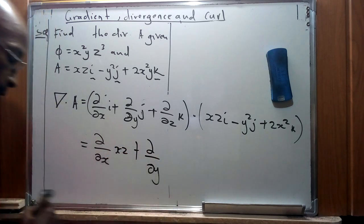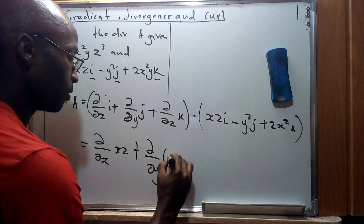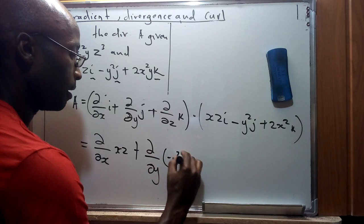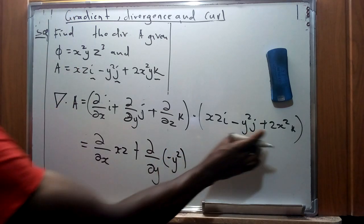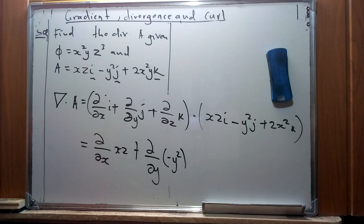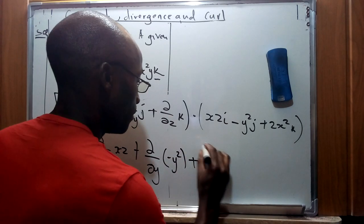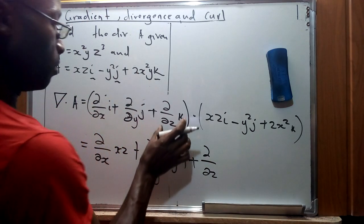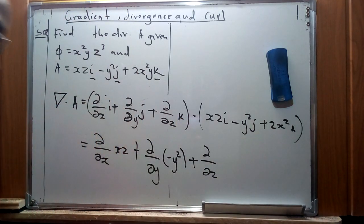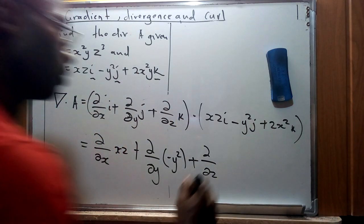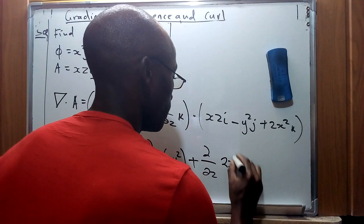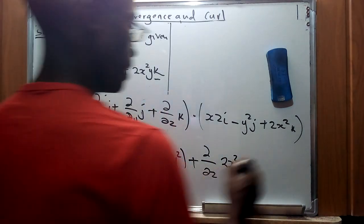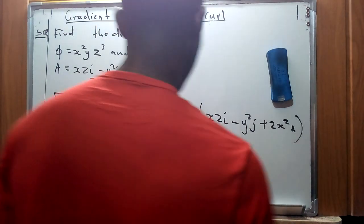The y component carries a negative value to indicate its sign, and for the z component we have 2x squared. So the three terms from the dot product are: the x-component term xz, the negative y-component term, and the z-component term 2x squared.